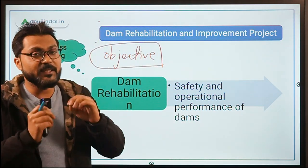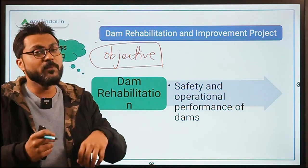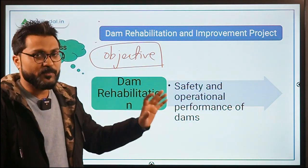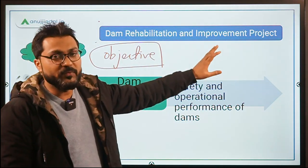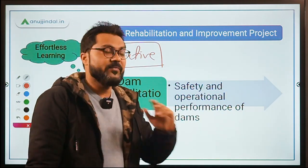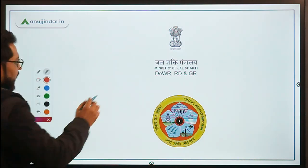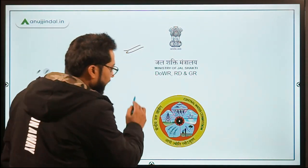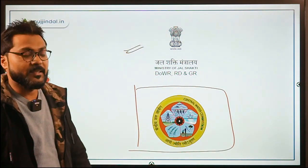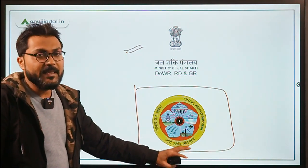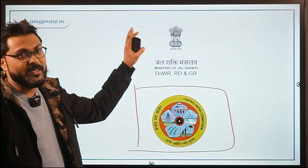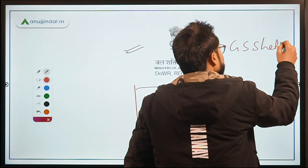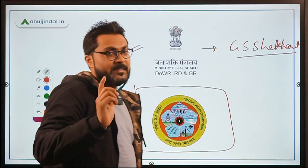We are talking about the safety and operational performance of the dams — our country's dams have to improve their safety and operational performance. This project was launched by the Government of India. The ministry is the Ministry of Jalshakti, and the implementing agency is the Central Water Commission. Before the exam, confirm the name of the current minister.